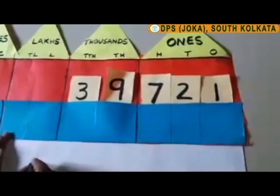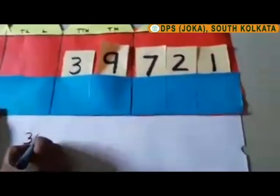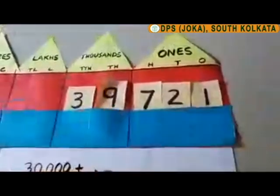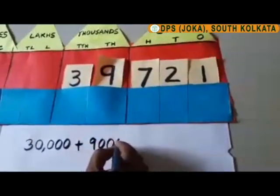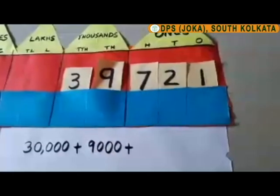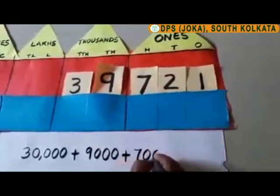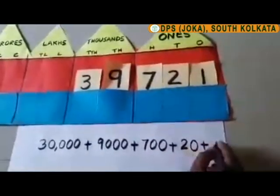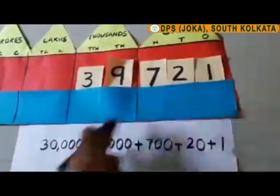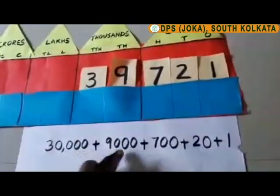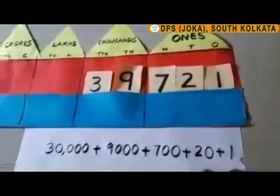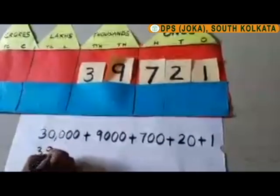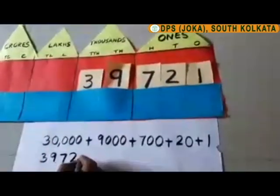This is how we expand the number. 3 is in the 10,000 house, so we write 30,000. 9 is in the thousands house — 9,000. 7 is in the hundreds house — 700. 2 is in the tens house — 20. And 1. So we have expanded the number as 30,000 + 9,000 + 700 + 20 + 1, which gives us 39,721.